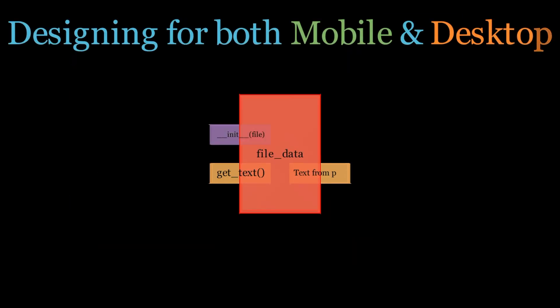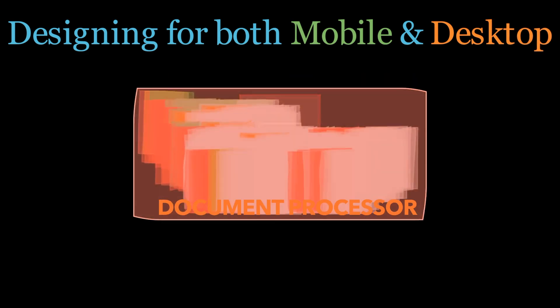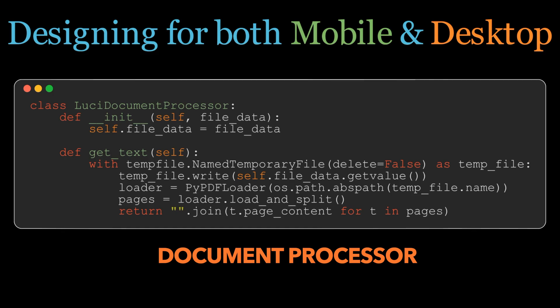Now let's focus on the critical component for mobile deployment: the document processor. This class showcases an approach to universal design. The get_text method here is a masterpiece of adaptability. Whether you're running locally on your computer or on somebody else's computer in the cloud, the process remains seamless. Upon receiving a PDF file, this class temporarily stores the file using a temp file — this is where the magic happens, regardless of where the app runs. This method smartly handles the file, extracting the text without a hitch.